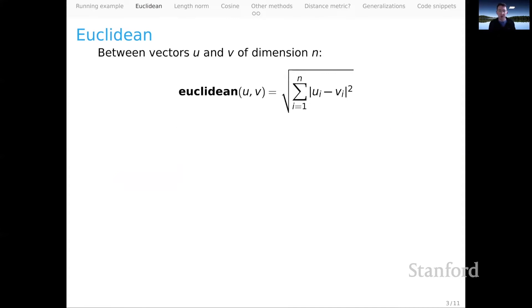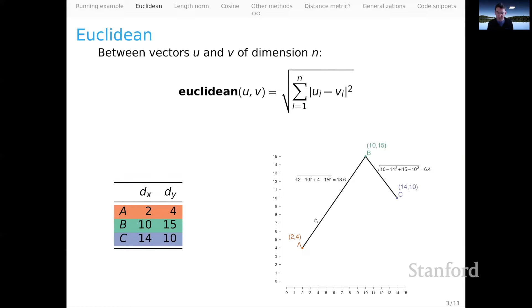Let's start with Euclidean distance — a very common and quite intuitive notion of distance in these spaces. We can measure the Euclidean distance between vectors U and V, if they share the same dimension n, by calculating the sum of the squared element-wise absolute differences and then taking the square root. Let's look at that in terms of our space. Here we have our vector space depicted graphically with A, B, and C. Euclidean distance is measuring the length of these lines — the most direct path between these points in our high-dimensional space.